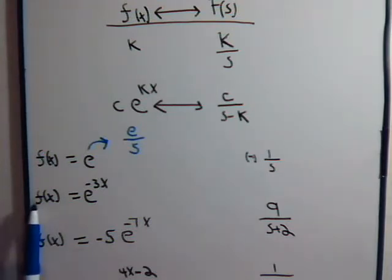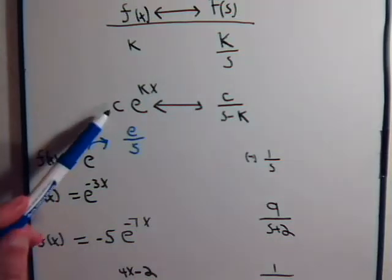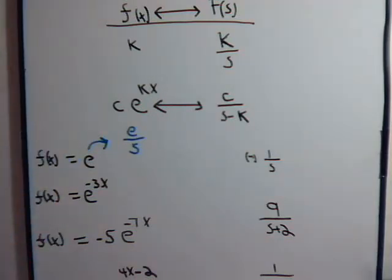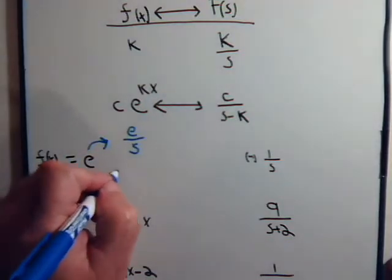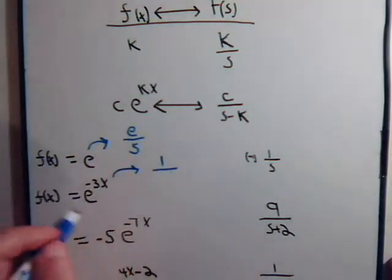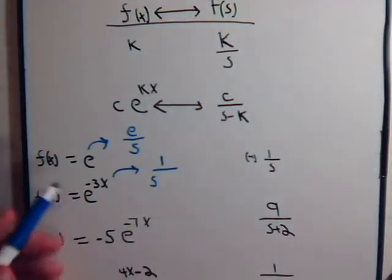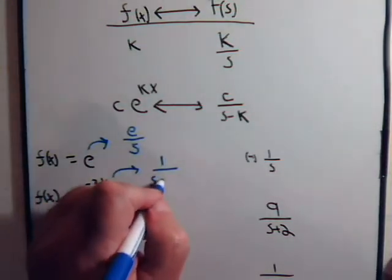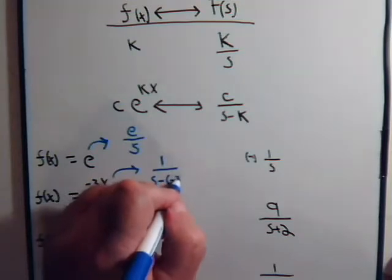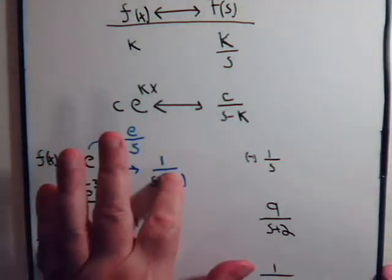Here we have the Laplace transform of e to the minus 3x. We're going to use the exponential formula, but it's just going to be multiplied by 1, so that's going to be equal to 1 over s minus negative 3, which would be 1 over s plus 3.